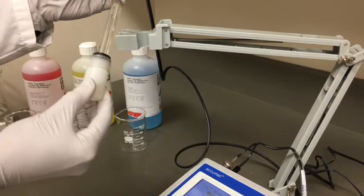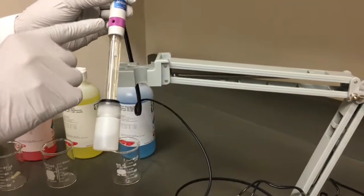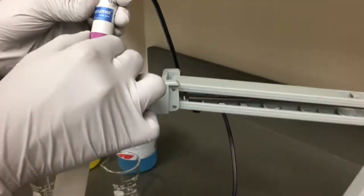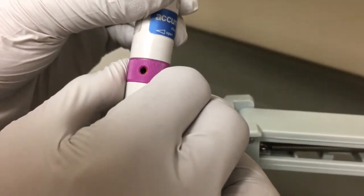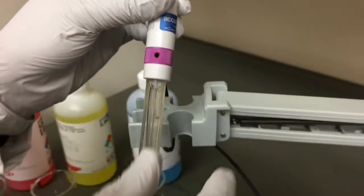The probe of the pH meter is stored in a high-salt buffer. If you have a refillable probe, locate the filling port and rotate until the port is in the open position. When stored, it remains closed to prevent evaporation of the filling solution.